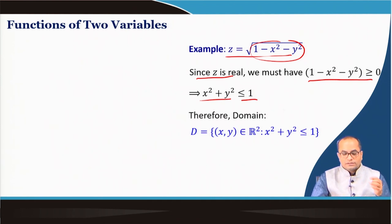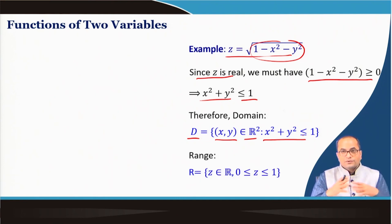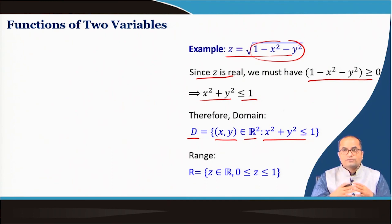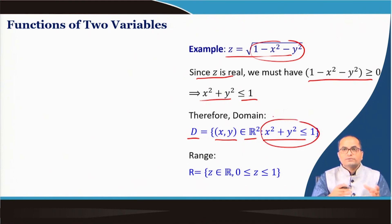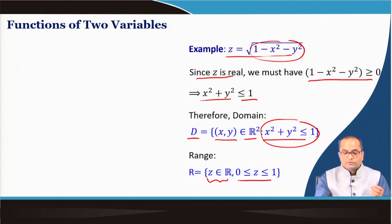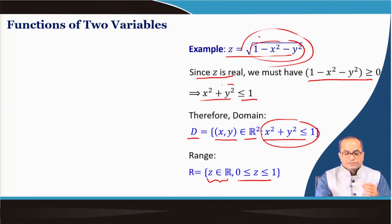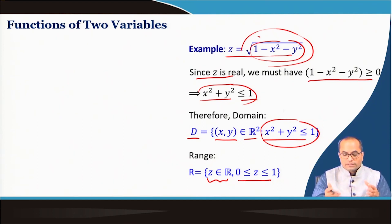From this inequality we get x² + y² ≤ 1. Therefore the domain of this function is the set of all points (x, y) in R² where x² + y² ≤ 1. For the range: z is a real number between 0 and 1, because the square root is defined only for positive values and with the restriction x² + y² ≤ 1, the value under the root is between 0 and 1, so z is also between 0 and 1.